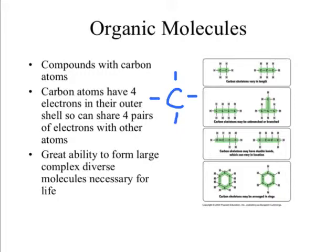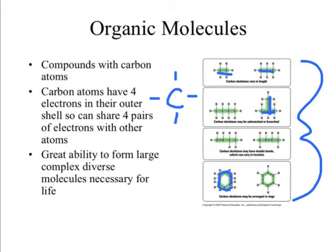We can see on the right here just a handful of different kinds of organic molecules that carbon can make — straight chains, branch chains, and rings of carbon. So it's a very, very versatile element.